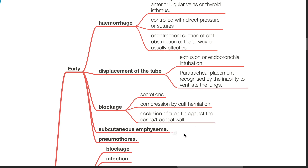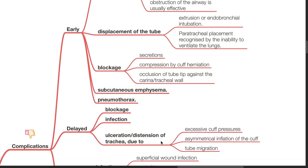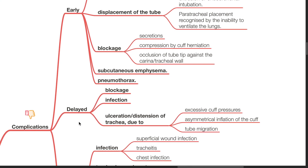Subcutaneous emphysema and pneumothorax are also early complications. Delayed complications include blockage, infection, and ulceration or distension of trachea due to excessive cuff pressures, asymmetrical inflation of the cuff, and tube migration.